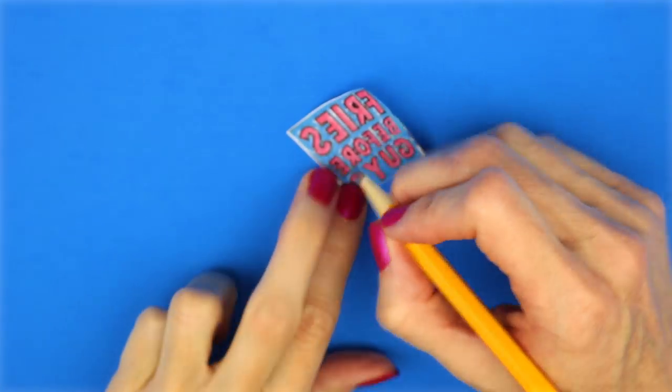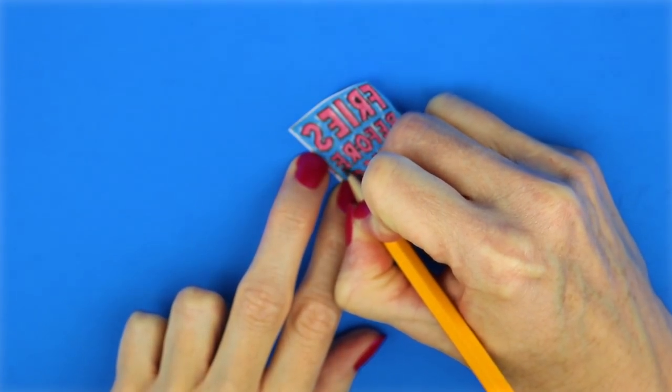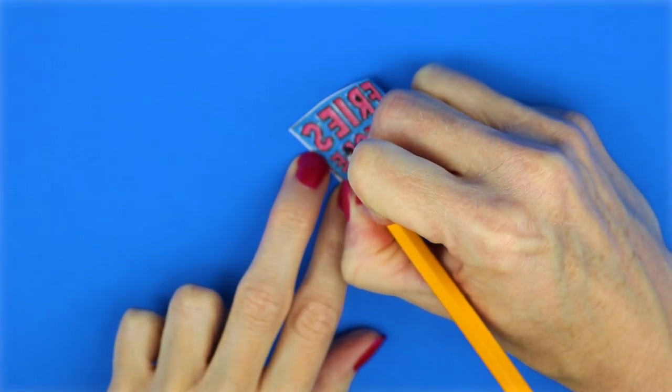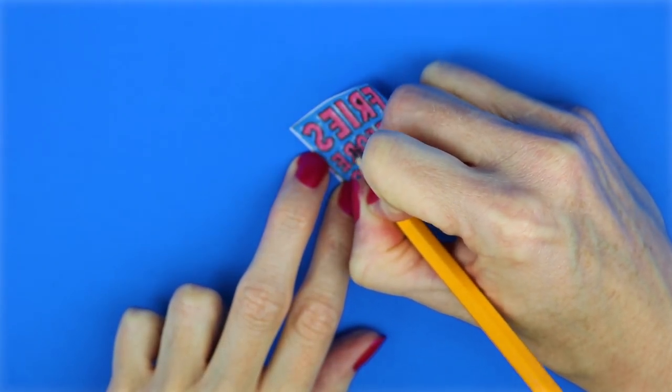The next thing I did was I went online and I printed out a saying, Fries before guys, and I mirror imaged that when I printed it out. And then with a pencil, I went over each of the letters.